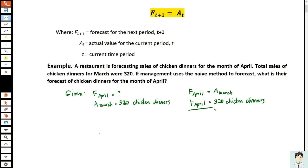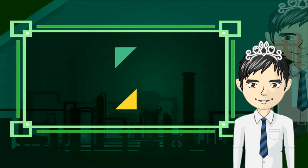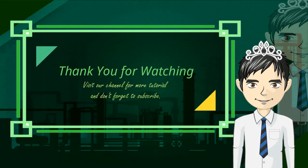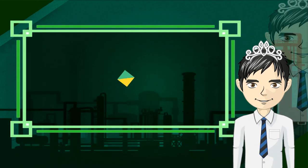That's it. It's easy. Remember, with the naive method, whatever the last actual sales were, that becomes the forecast for the current period.